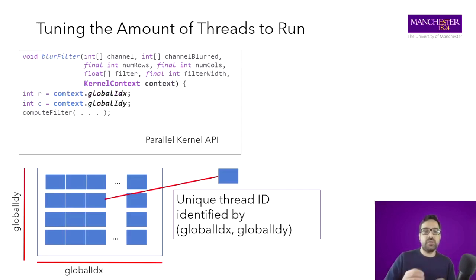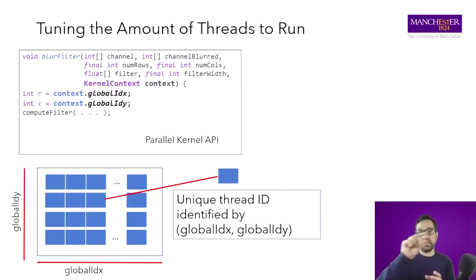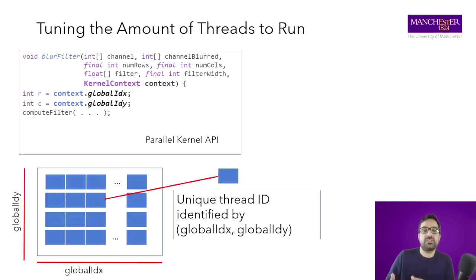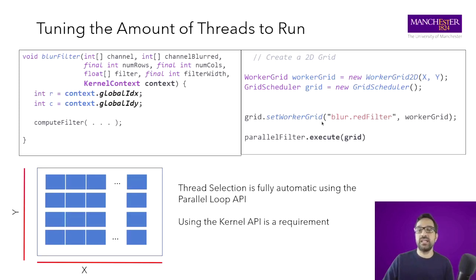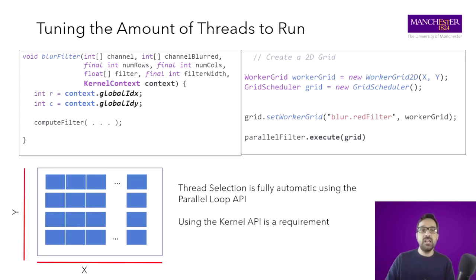For the Parallel Kernel API, we need to specify the number of threads explicitly, since TornadoVM can no longer infer them automatically from loop bounds. Because it's a 2D grid, the user creates a Worker2D object, passing the number of threads to run in the x-dimension and the y-dimension. Then you set the function name with that worker grid. The only difference when calling execute is that you also need to pass the grid.